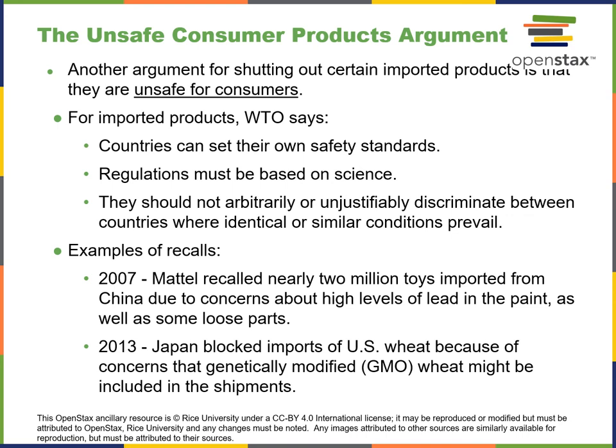And it's not just China. Japan blocked imports of US wheat because of concerns that GMO wheat might be included in shipments. A lot of people don't like what I call 'Frankenfood' — basically genetically modified food that repels bugs better and grows bigger — because they feel like you're messing with the gene structure of the product, and it could have negative health effects on those consuming it.